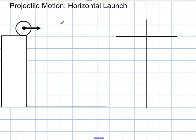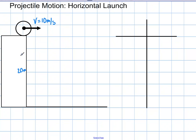We're going to do a very simple projectile motion problem right now, and we're going to be dealing with a horizontal launch. This is an object rolling off a cliff with an initial speed of 10 meters per second. The cliff is 20 meters high, and we want to find a lot of information out about this object.